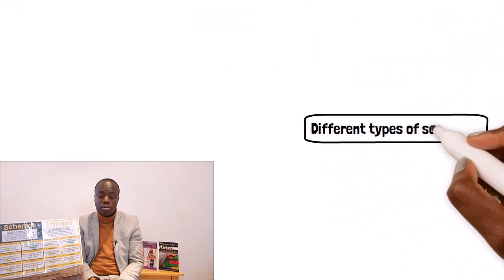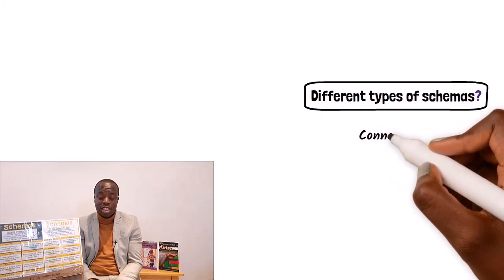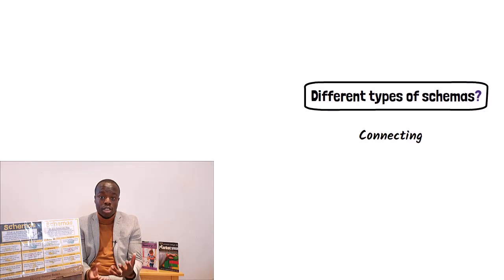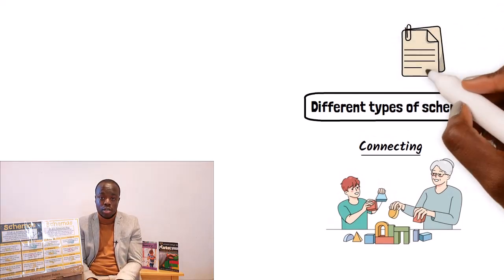So what are the eight different types of schemas? We'll go through them alphabetically now. Starting with connecting. This involves children joining things together, connecting objects and opening and closing things. Children will find resources like strings to tie things together or they might staple paper together for example.